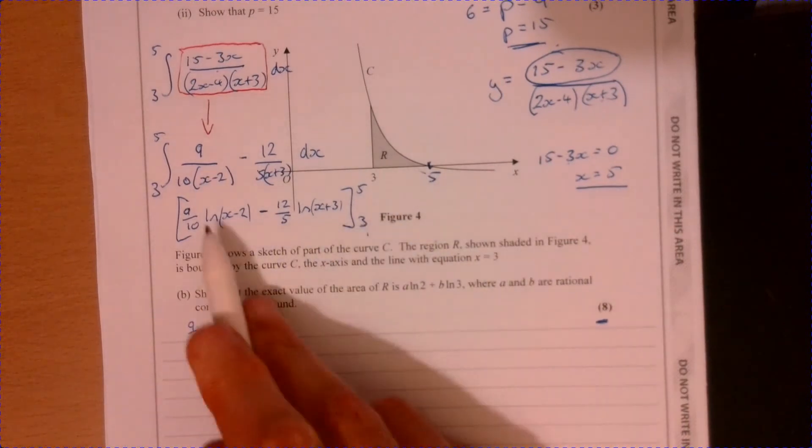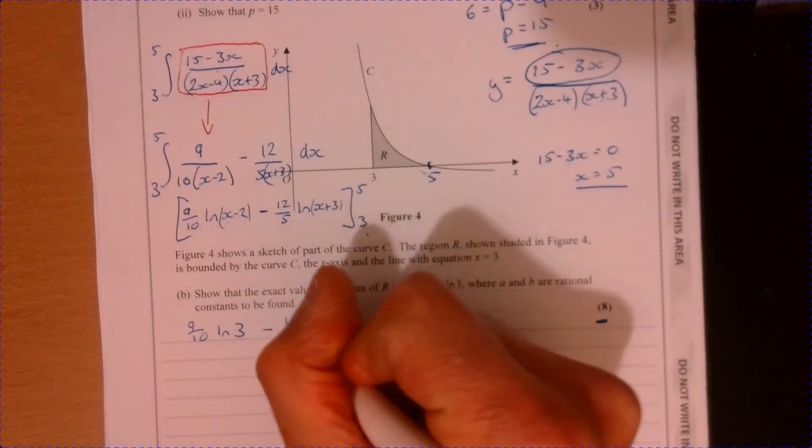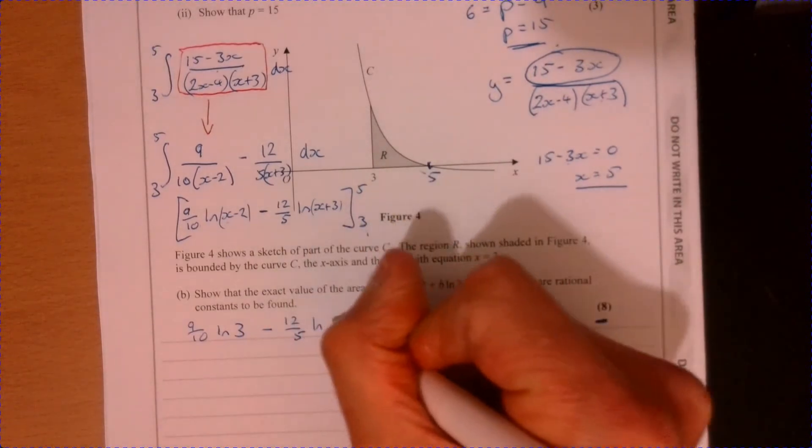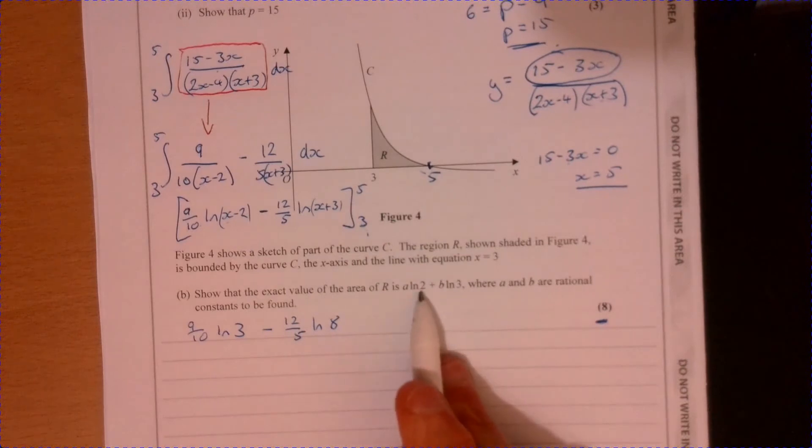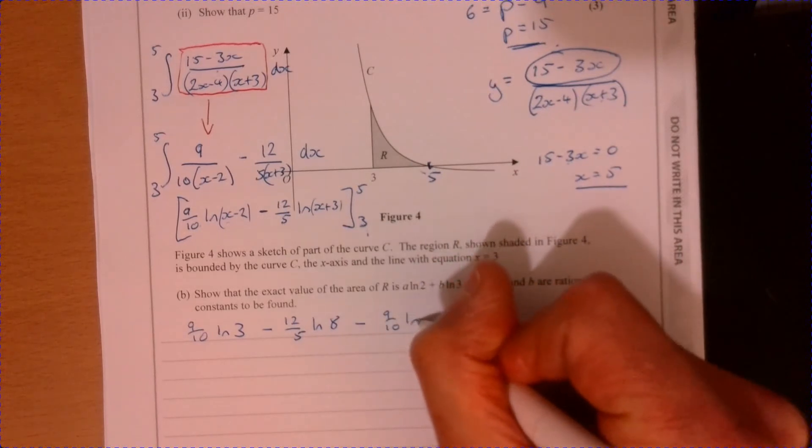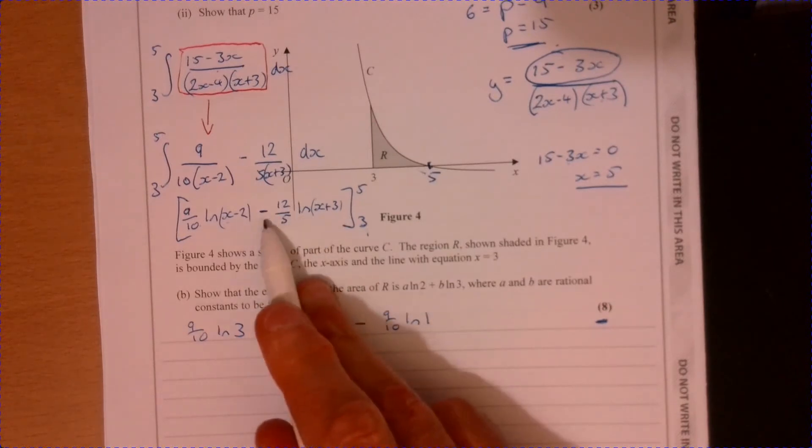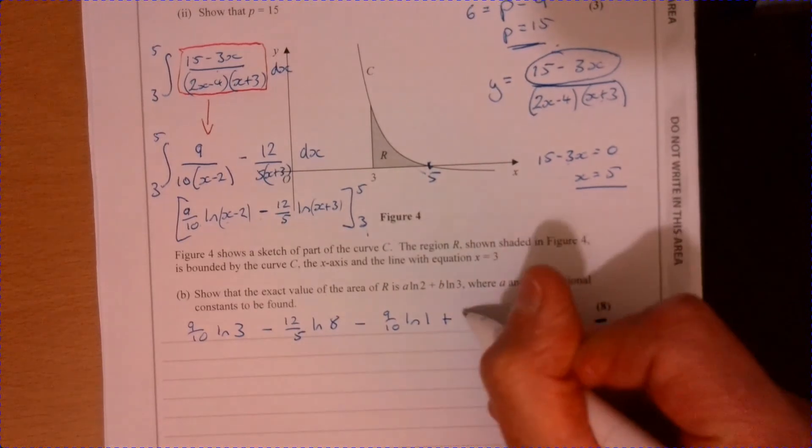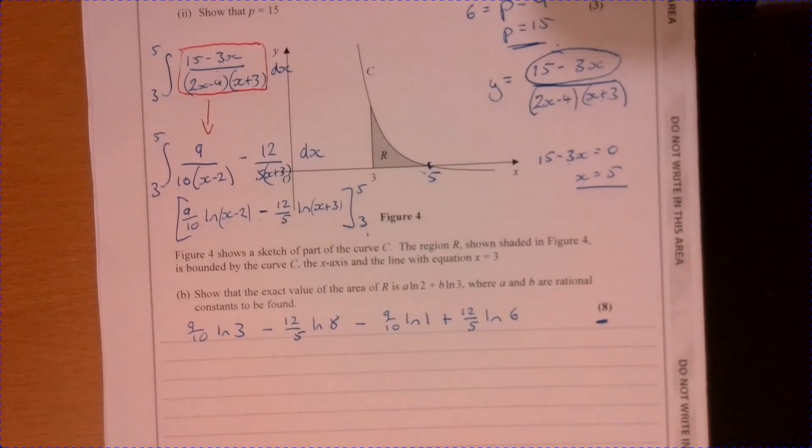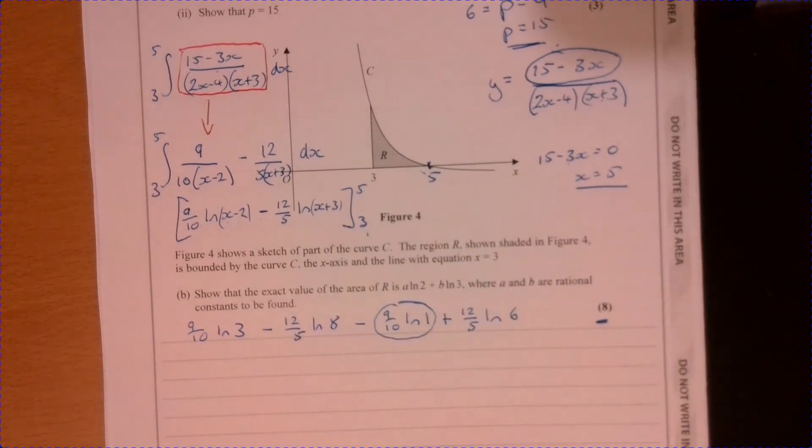So we can have 9 tenths of ln 3. Don't worry about trying to work stuff out for a minute. Let's just do one thing at a time. And then ln 8. We'll worry about ln 8 in a minute because if you look at this, you're trying to get it in 2s and 3s. And then we're going to take away 9 tenths of ln 1. And then we're going to take away the second part, so it's actually going to become a plus. And then that's 12 fifths of ln 6. Now let's just try and think about, well, that bit there, that's just going to be 0. So I don't need to worry about that.